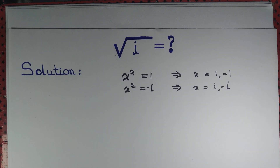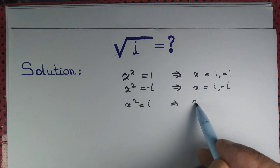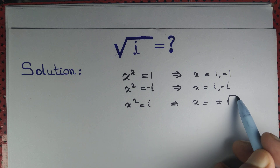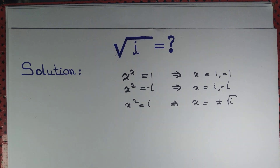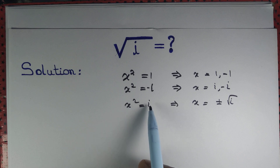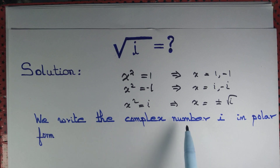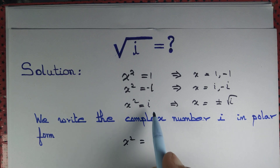What about the equation x² = i? Obviously we expect x = ±√i. Now observe that if x is a real number, then x² is also a real number that cannot be equal to the imaginary number i, so x cannot be a real number. If x is not a real number, it might be a complex number, so we write the complex number i in polar form. So x² = i.